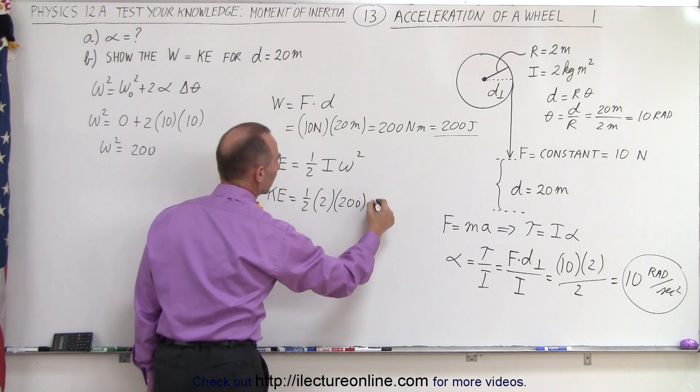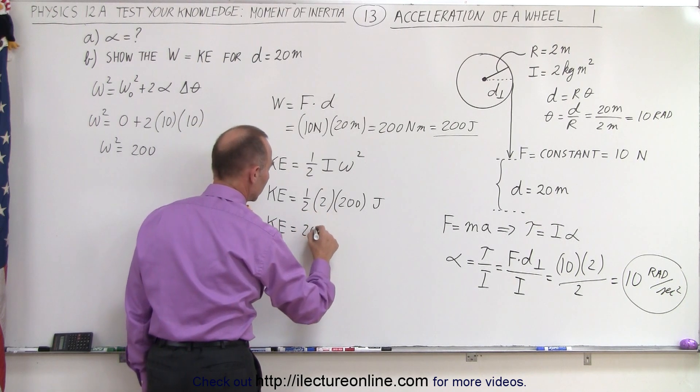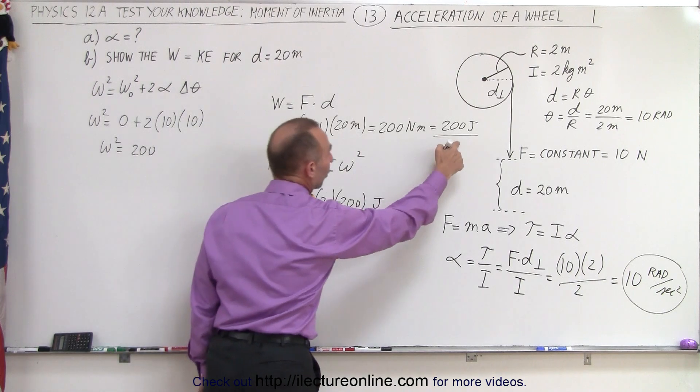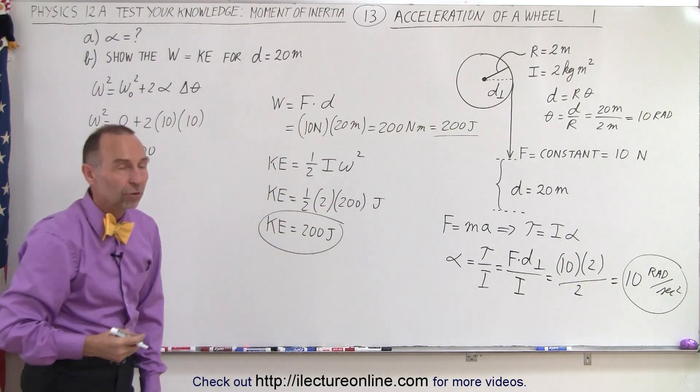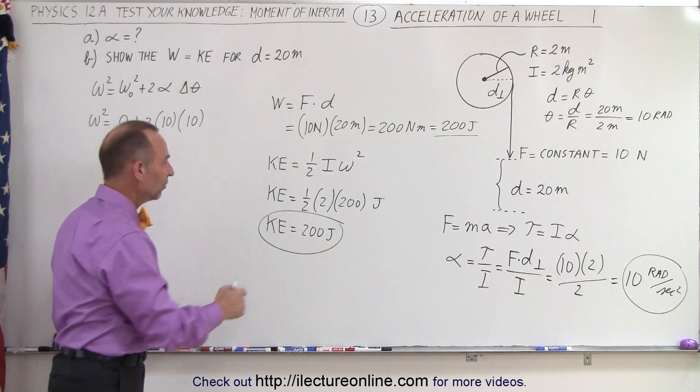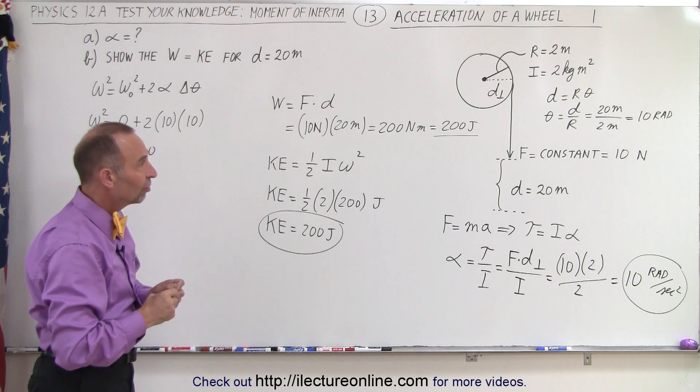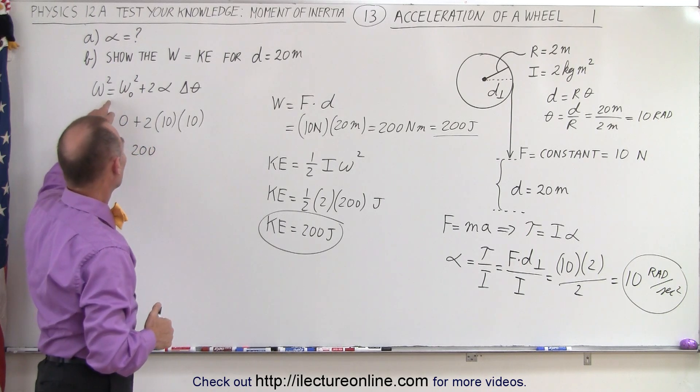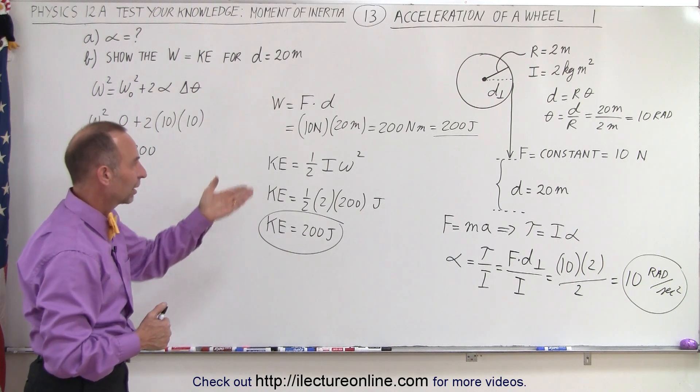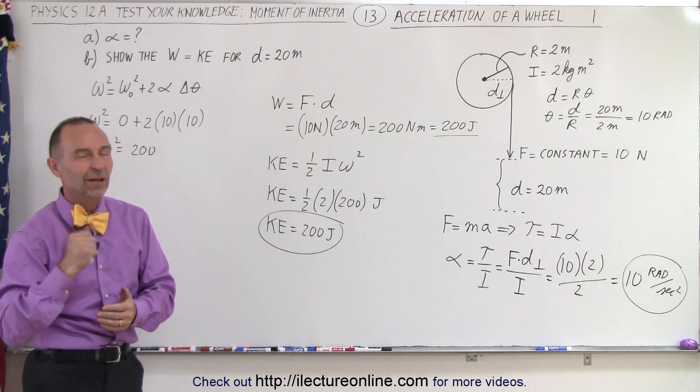Of course, that would be in joules. And kinetic energy, if we simplify that, that cancels out. Indeed, we get 200 joules as well, which means that the work done to pull the string down 20 meters, which requires 200 joules of work, is the same as the kinetic energy gained of the wheel when it reaches its final omega. So you see that clearly work put in equals kinetic energy gained. And that is how it's done.